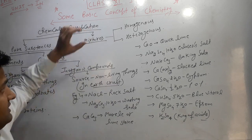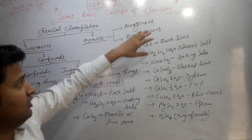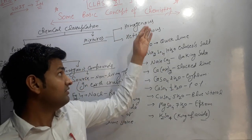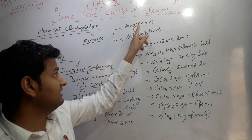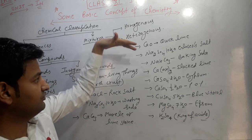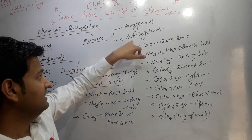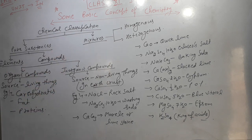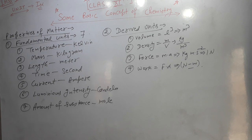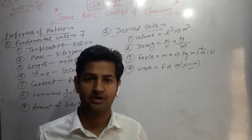Next is mixture. Mixture is again of two types: homogeneous and heterogeneous. Homogeneous mixtures are those where the composition throughout the mixture remains the same. In the case of heterogeneous mixtures, the composition will be different in different parts. That completes the classification of matter — physical classification and chemical classification.